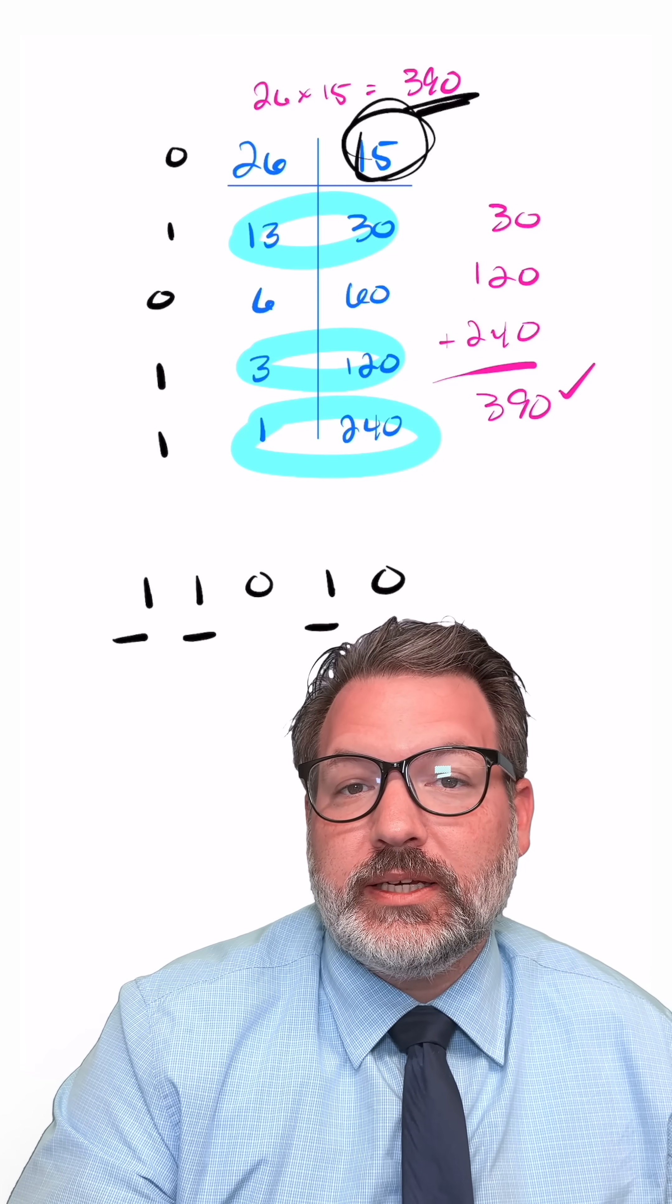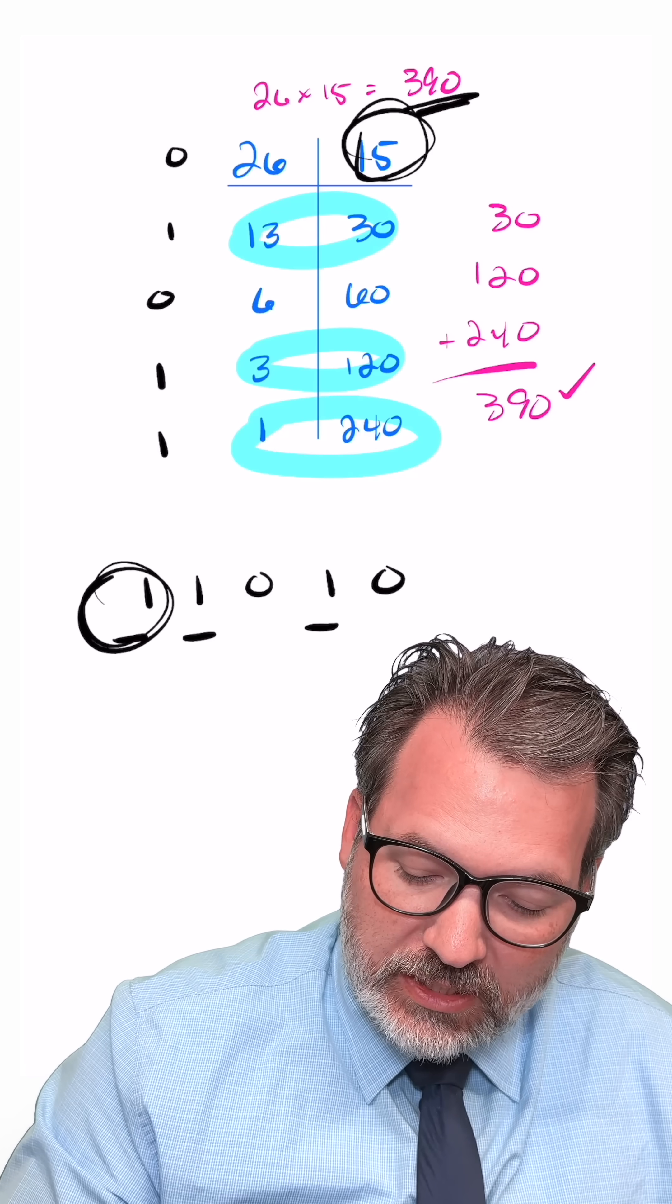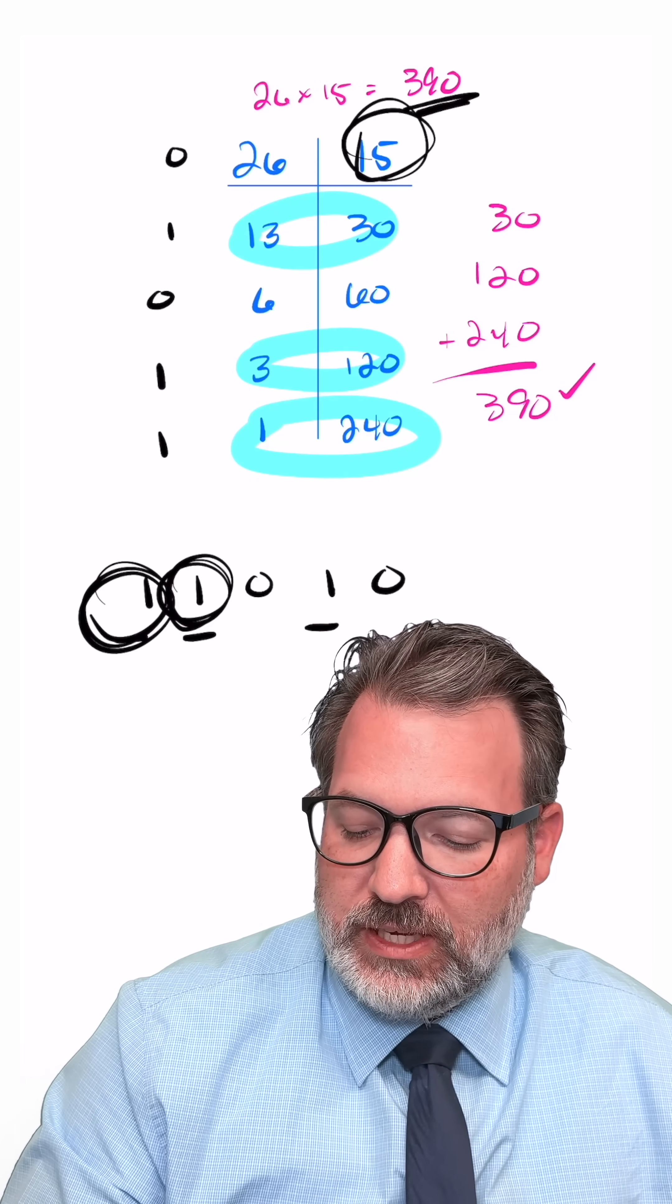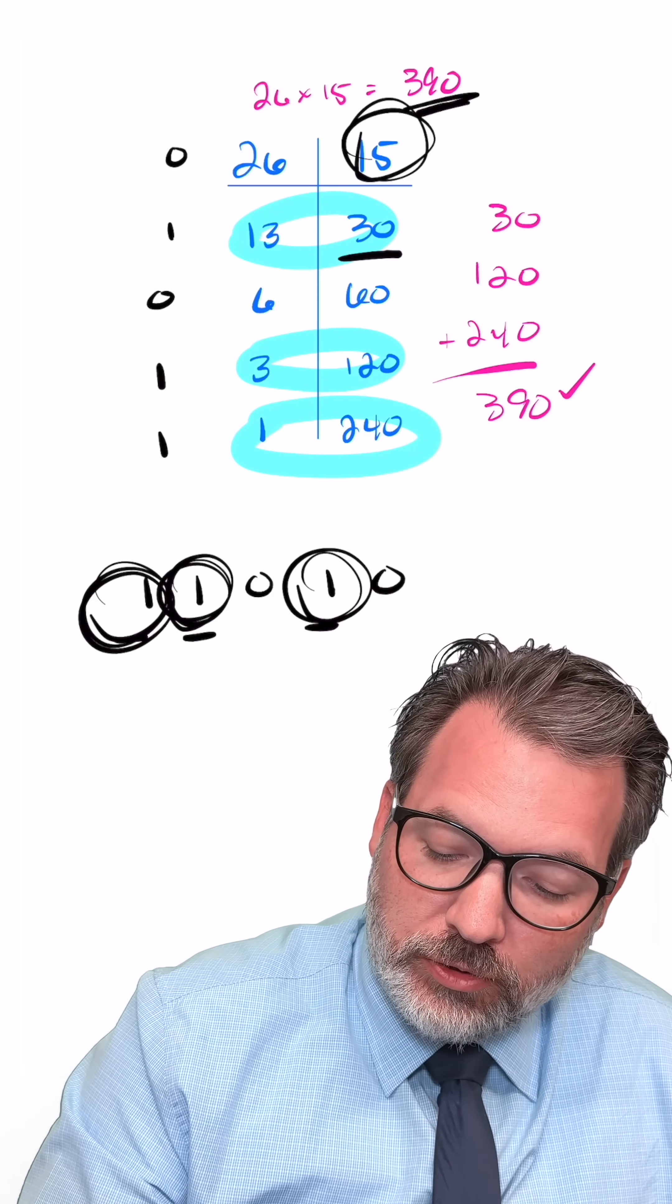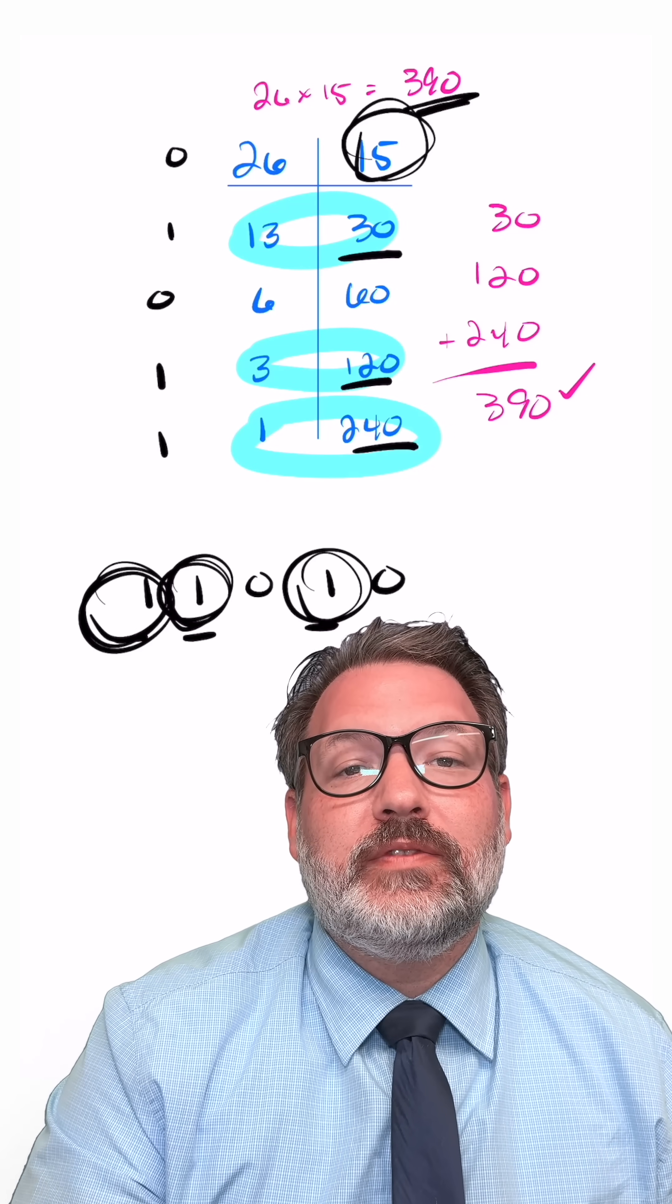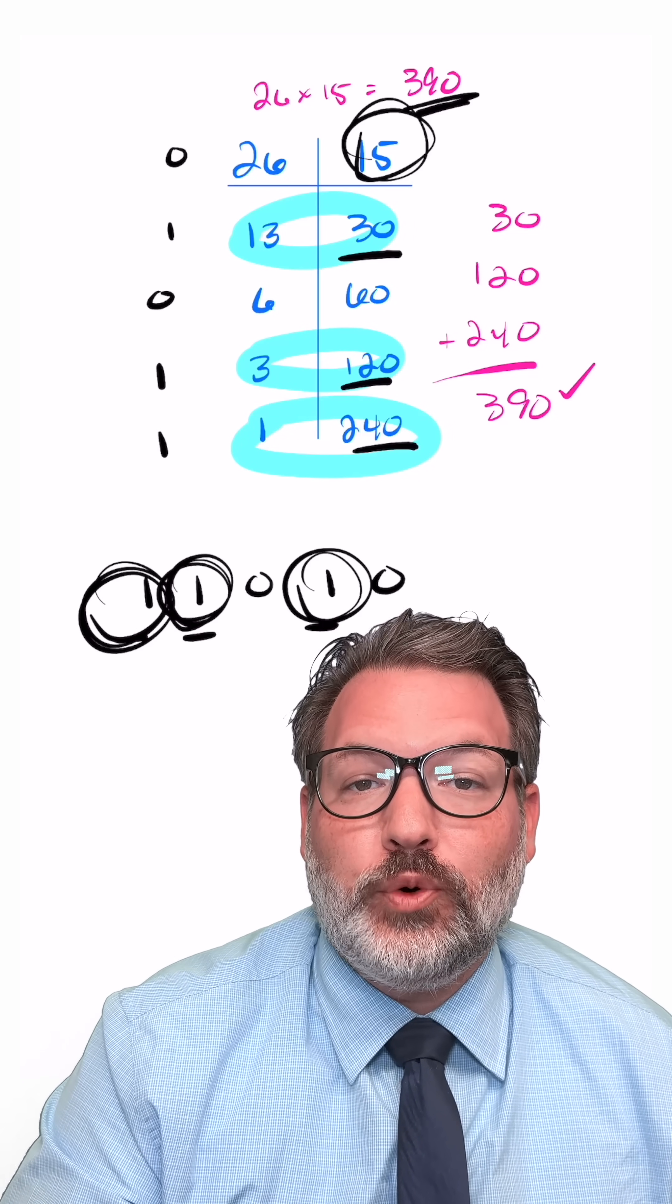So our product for 26 times 15 is really 16 15s plus 8 15s plus 2 15s, which you'll notice is exactly what the right side of the table was keeping track of for us.